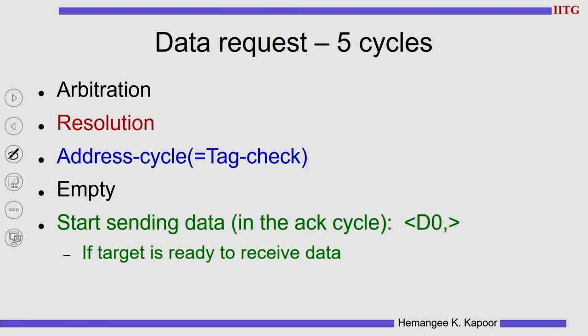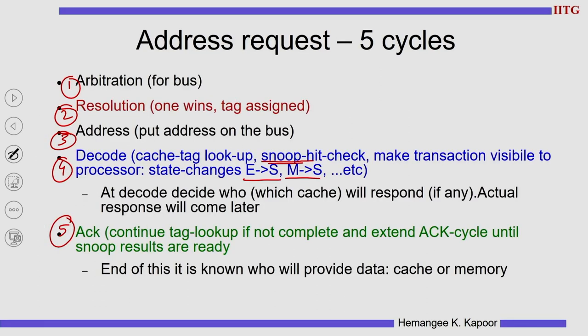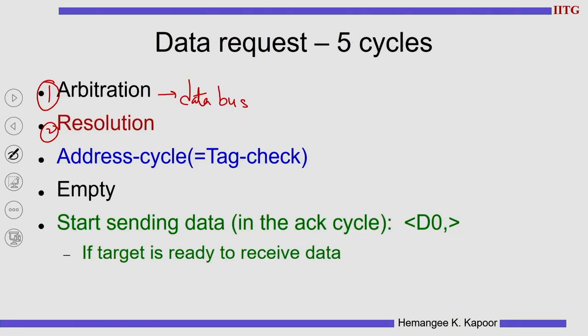Next is the data request and then the data response. Data response is for sending the data, but before sending the data you have to get permission — five cycles again. First cycle: arbitrate for the data bus. Second cycle: you get the bus. Once you get the bus, in the third cycle — the address phase — you put the tag instead of the address. If the request went for address 5000, the response will not come for address 5000 but for message ID or message number 3 — the pending request ID is used here instead of the address.